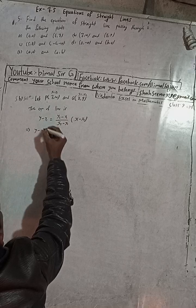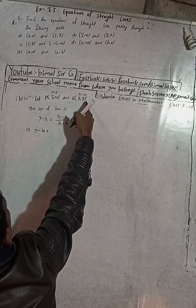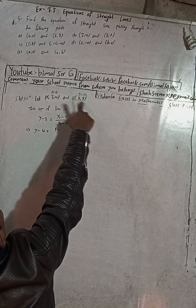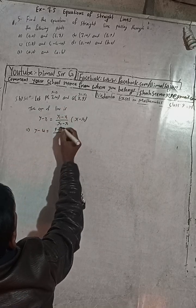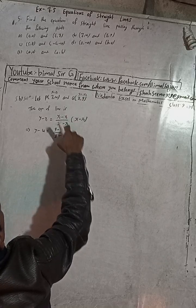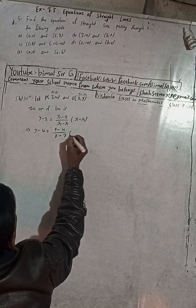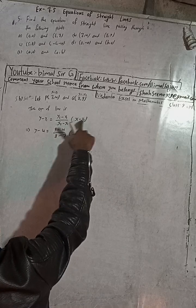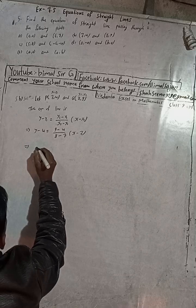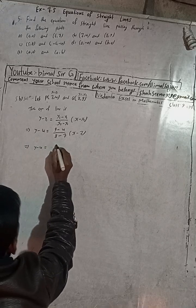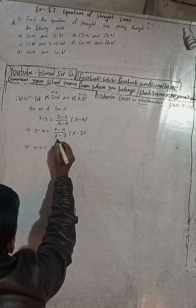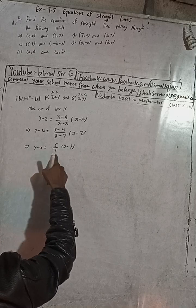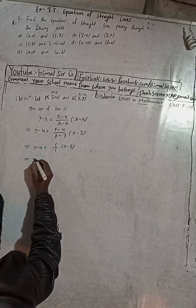Substituting: y2 minus y1 is 9 minus 4, and x2 minus x1 is 8 minus 7. So y minus 4 equals (9 minus 4) over (8 minus 7), into (x minus 7). That gives y minus 4 equals 5 over 1 times (x minus 7). Multiplying through: y minus 4 equals 5x minus 35.